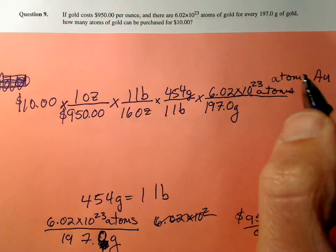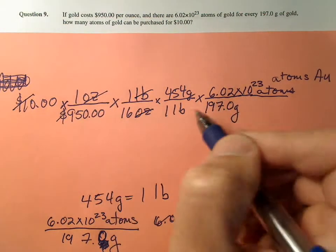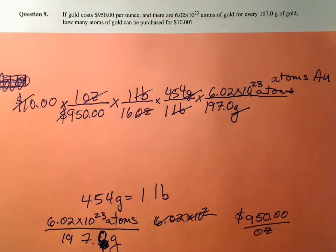Alright, let's double check units. Dollars, dollars, ounces, ounces, pounds, pounds, grams, grams, atoms - that's what we're shooting for. So now it's just a matter of plugging and chugging.